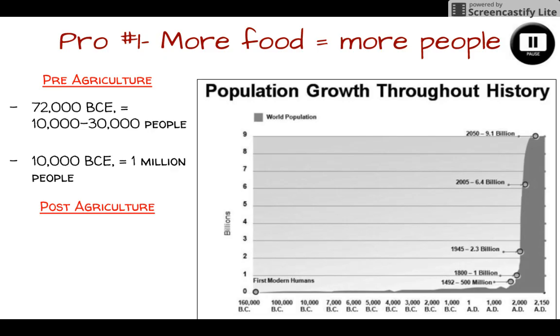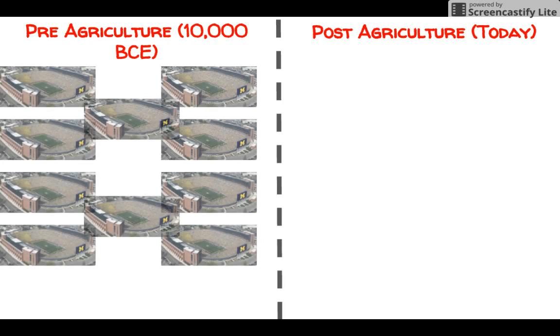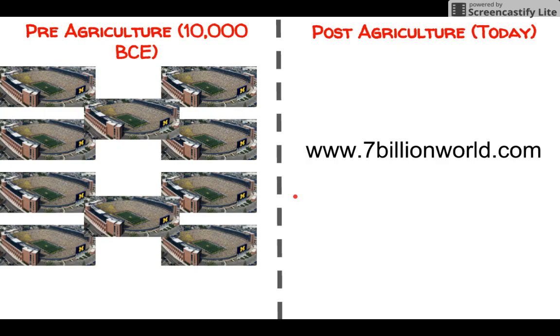Right before we discovered agriculture, we had just hit the one million mark. Now that we have discovered agriculture, our population will boom. Currently we have 7.1 billion people on this planet, and within the next 30 years experts believe we'll have close to 9 billion. Before agriculture, we had about 10 football stadiums' worth of people. To really visualize 7 billion, you can visit 7billionworld.com.